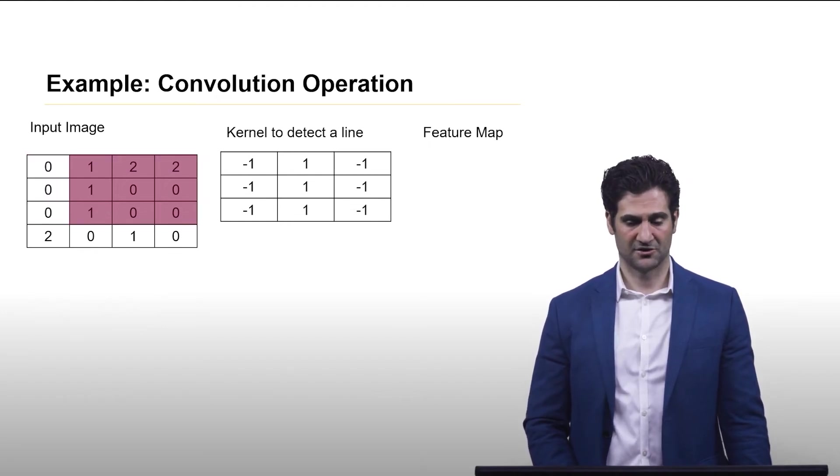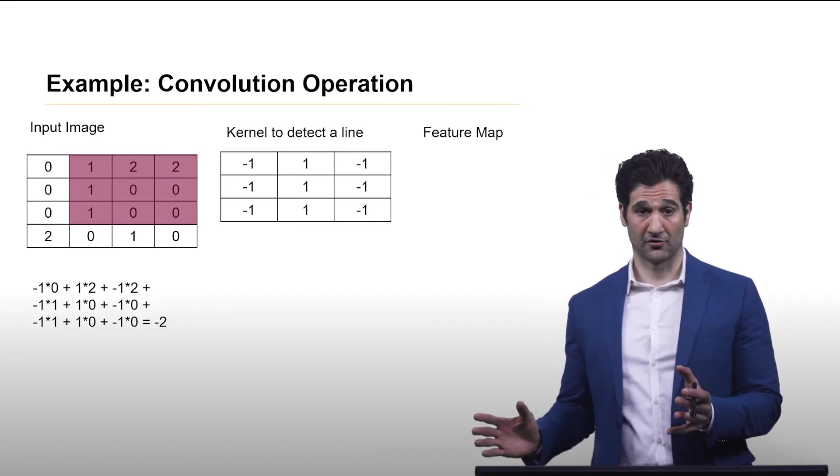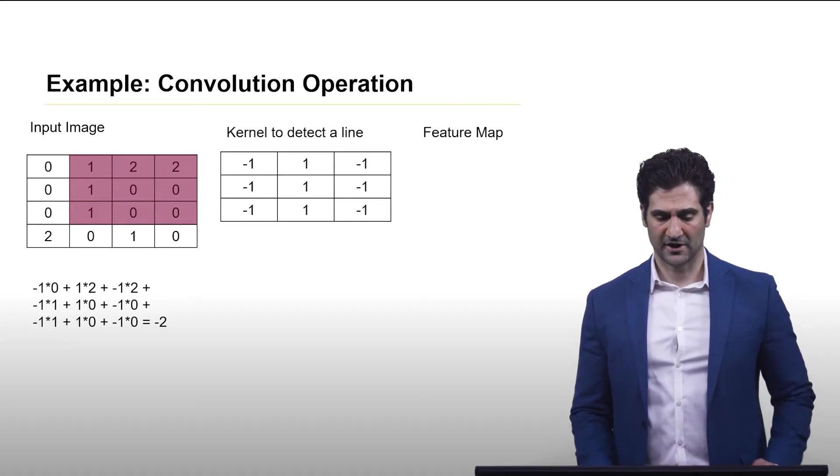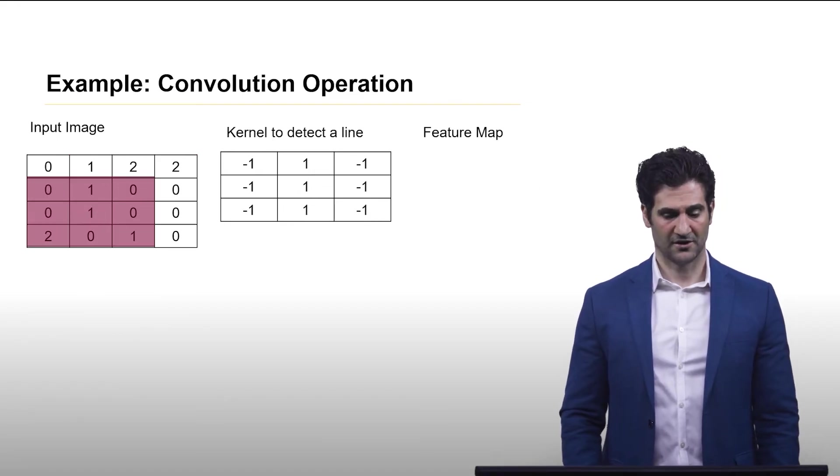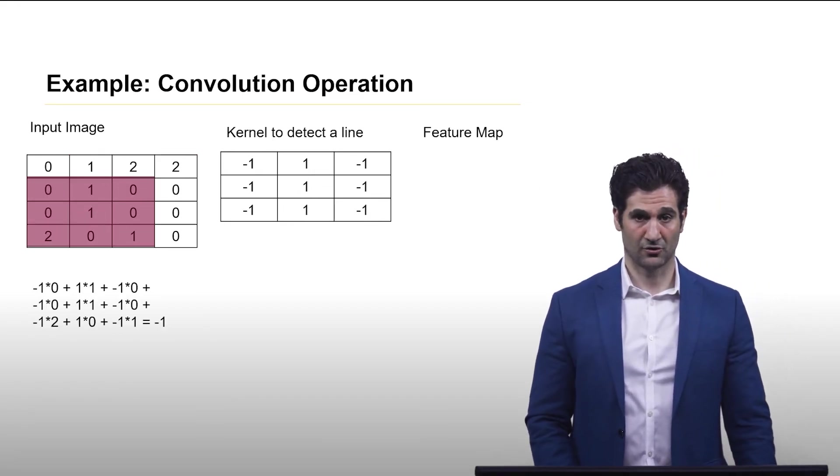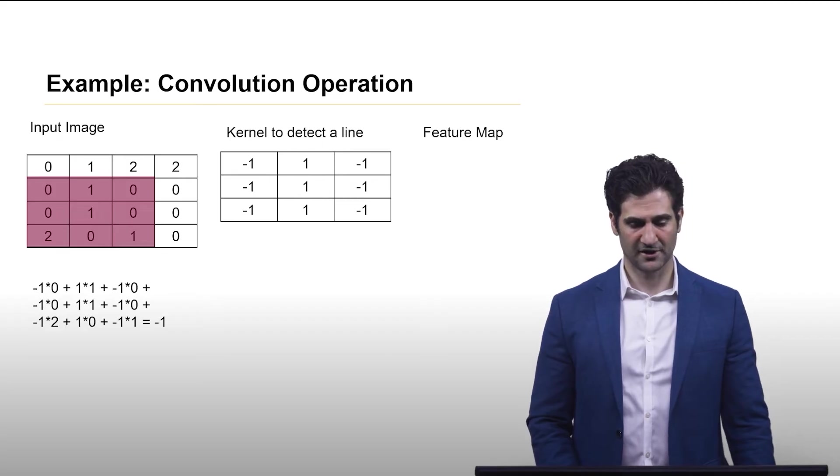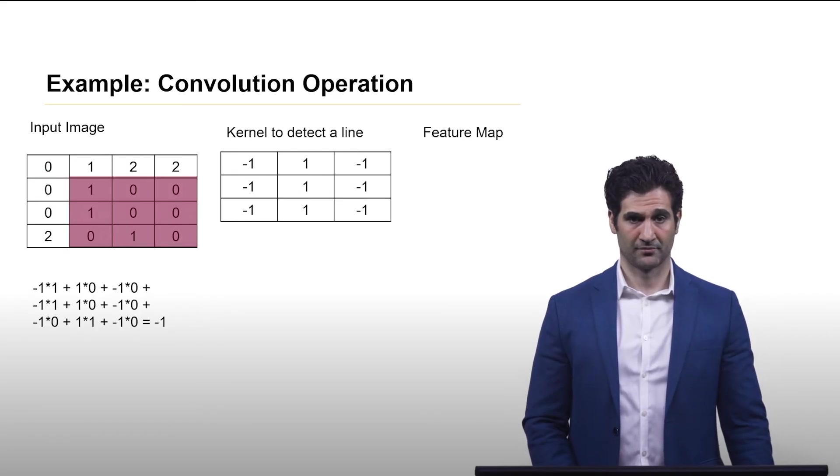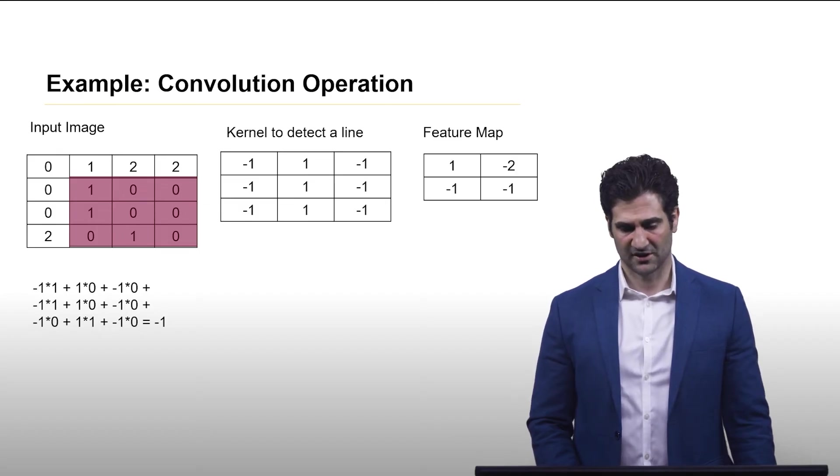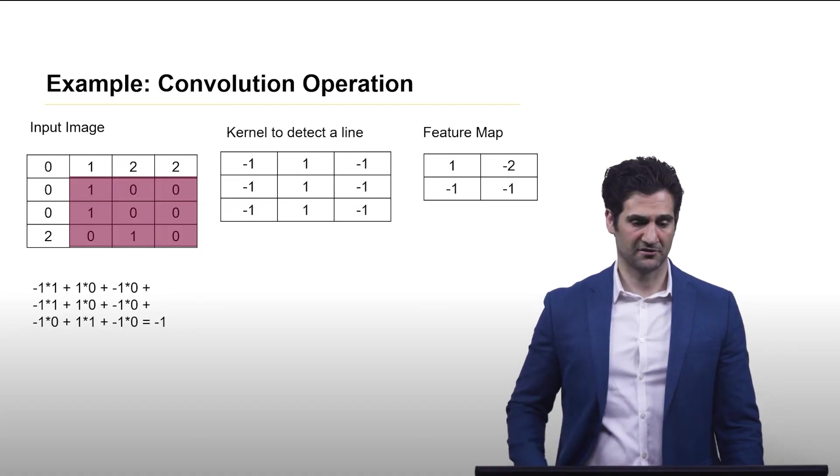Let's do it again. Now it's moved over one pixel and we got a negative 2 with the math. And now let's do the lower left-hand corner. Here we get a negative 1. And then the lower right corner we get a negative 1 again. And there's our resulting feature map.